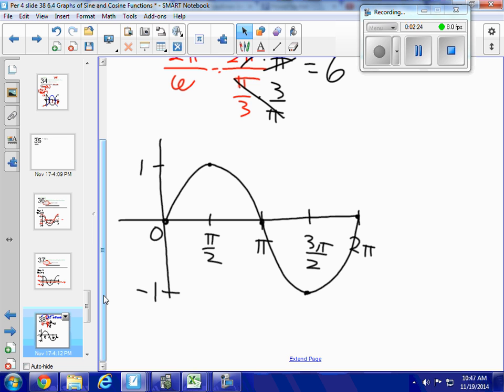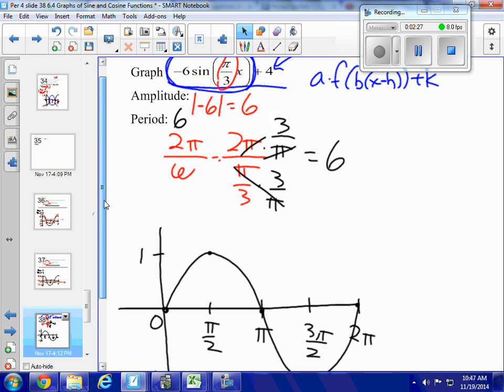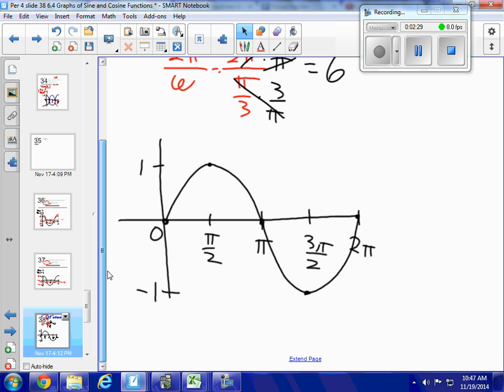I've got my five key points, but I know that my period is 6. My period is not 2 pi. Well, it's easy enough to do. Instead of 2 pi, I'm going to make it 6. And in the middle, between 0 and 6, is 3. And between 0 and 3, is 3 halves. It's 1 and a half. And between 3 and 6, it's 4 and a half, or 9 halves. So I've just changed all my key points. Probably better if you erase them. Or you could have just started with 6, 3, 0, 3 halves, 9 halves, and not put in your other ones at all.